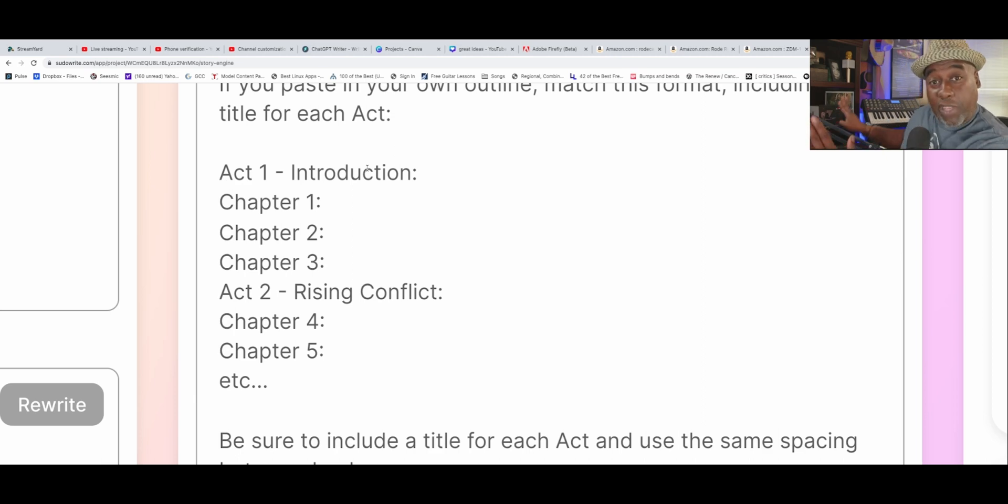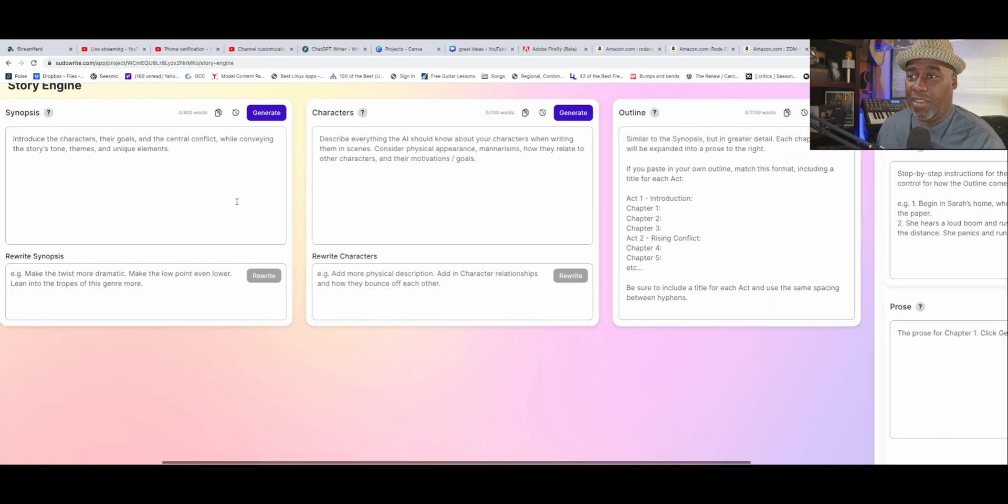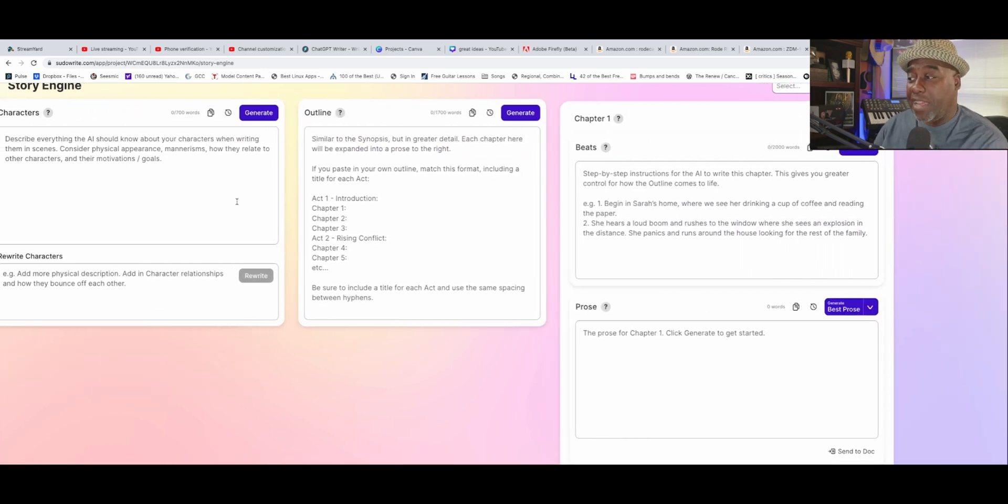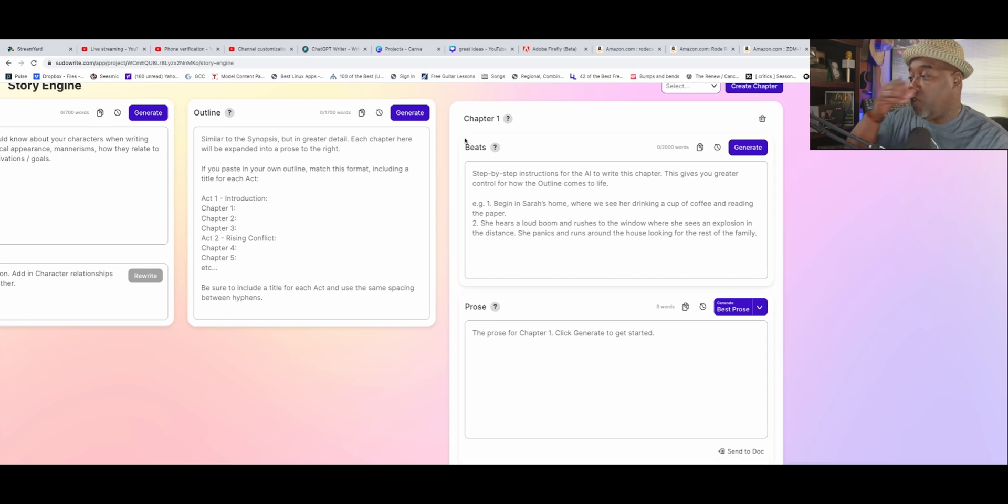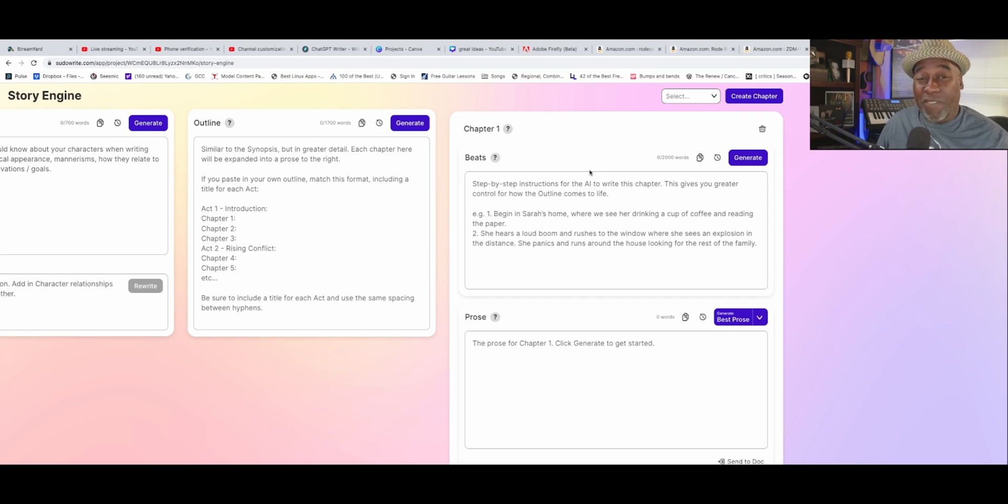Remember, it's using all of the information from here back. All of that. The brain dump, the genre, the style, the synopsis, all of that. The characters, all of that. And creating a complete outline for you. Then you can take each one of those chapters and it will put out beats for you. Very specific beats.